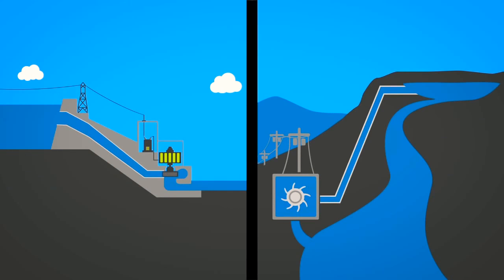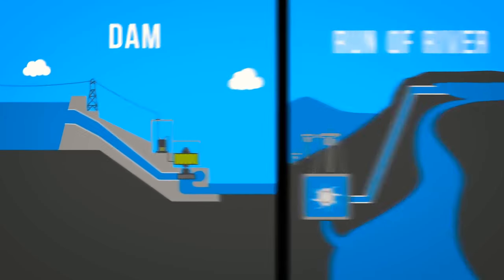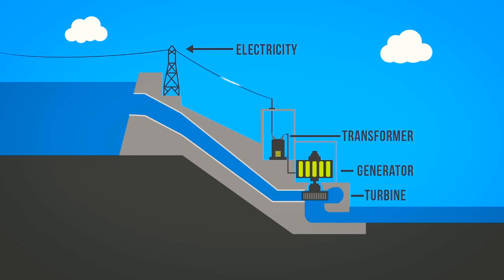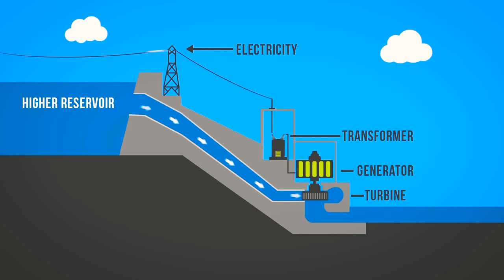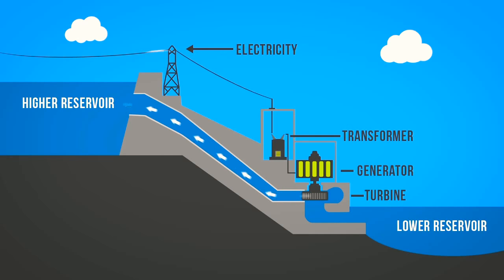There are two main types of hydroelectricity production: dams and run of river. Hydro dams utilize the potential energy from dammed water to produce electricity. A dam is a large barrier constructed to raise the level of water and control its flow. The elevation created by the dam creates gravitational force for turning the turbine when water is released. Some dams also contain an additional reservoir at their base where water is stored to be pumped to the higher reservoir for release when electricity is in demand. This is referred to as pumped storage hydro.